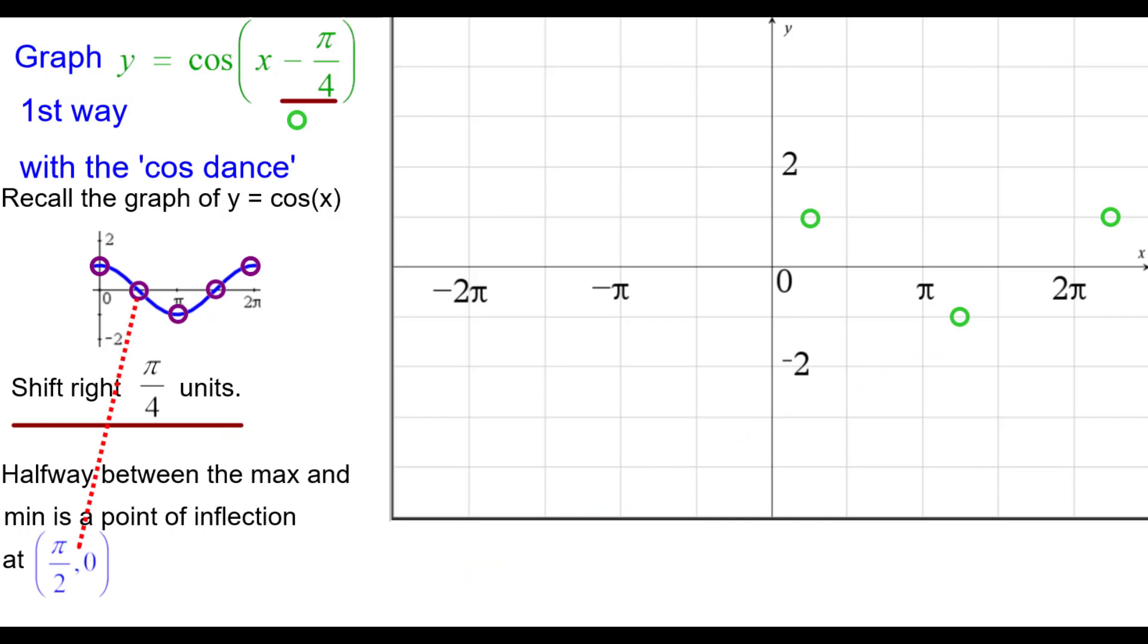Halfway between those is a point of inflection at (pi over 2, 0), but we are shifting that pi over 2 another quarter of a pi to (3 quarters pi, 0).